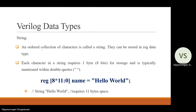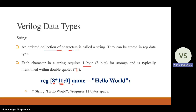The next data type is string. A string is a collection of characters and can be stored in a register data type. Each character in a string requires one byte — 8 bits of storage. Strings are typically written within double quotes. The syntax uses a register with square brackets: for example, reg [11*8-1:0] name. Here the vector size is based on the number of characters — for instance, the string 'hello world' has 11 characters, so the register declaration is reg [(11*8)-1:0] name.